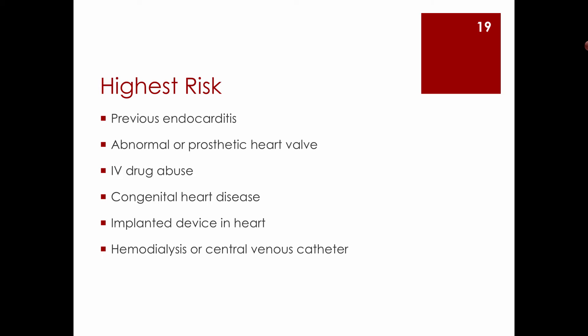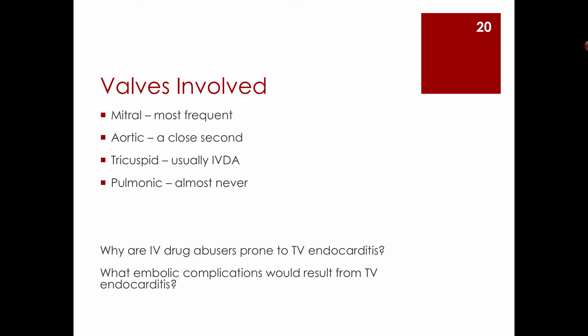The person at highest risk for endocarditis is someone who has previously had it — they have a proven abnormal valve and demonstrated susceptibility. Others at risk include those with prosthetic heart valves, IV drug abusers — who are notably the only group that commonly gets tricuspid valve endocarditis — and those with congenital heart disease. Left-sided valves (aortic and mitral) are most commonly affected in non-drug users due to higher pressure and greater turbulence.